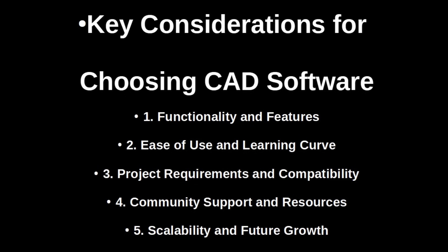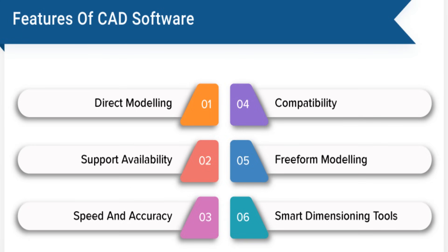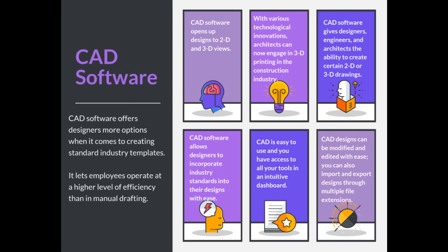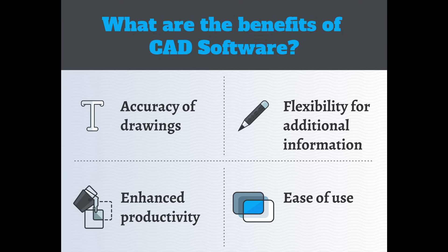So, some key considerations for choosing CAD software. One: functionality and features. For beginners, prioritize software with basic tools for simple 3D modeling and design, with user-friendly interfaces and guided tutorials. Intermediate users should seek platforms offering more advanced modeling capabilities including parametric design, assembly modeling, and simulation features. Advanced users require comprehensive tool sets encompassing CAD, CAM, and CAE functionalities, with real-time collaboration, complex simulation, and precise design control.